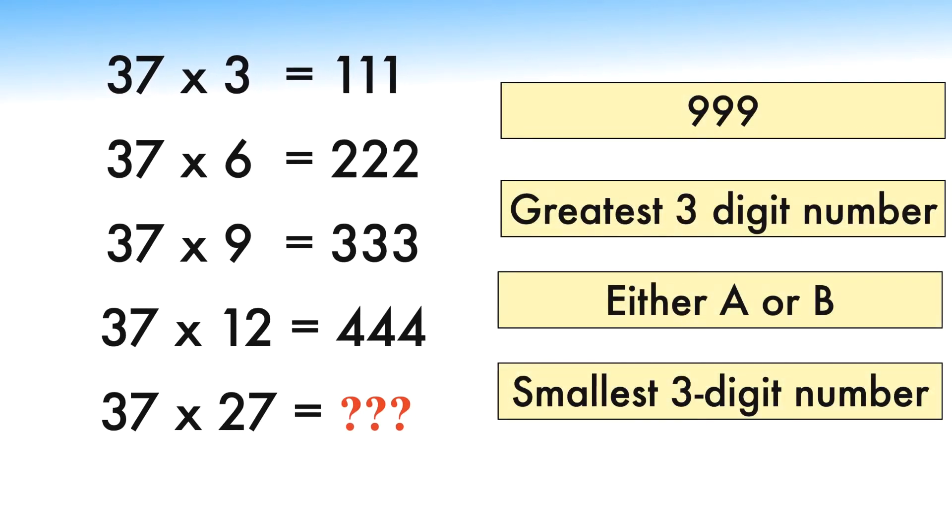You are given 4 options: Option A is 999, Option B is greatest 3 digit number, Option C is either A or B, Option D is smallest 3 digit number. Feel free to pause the video and give it a try before checking the solution. If you're visiting this channel for the first time, do consider subscribing.